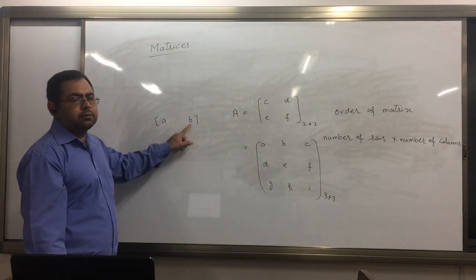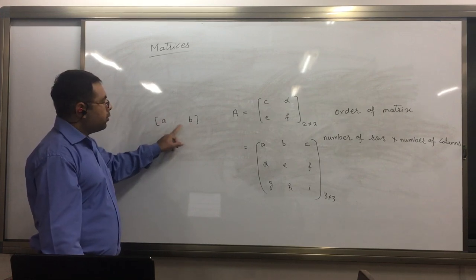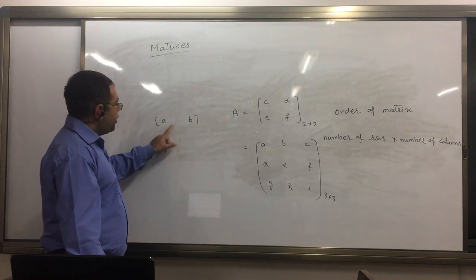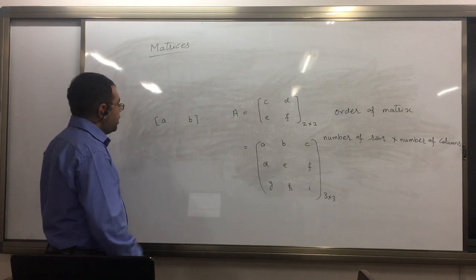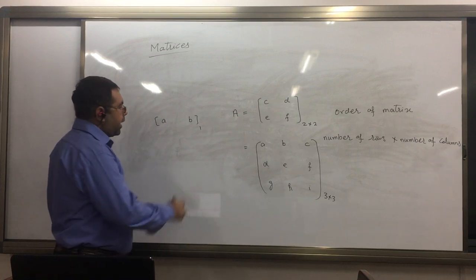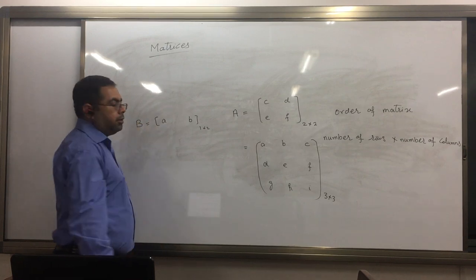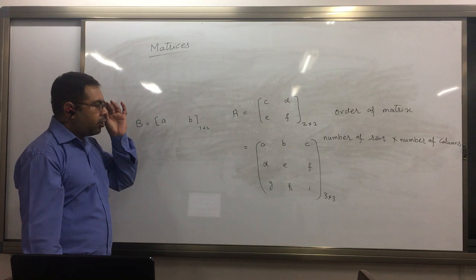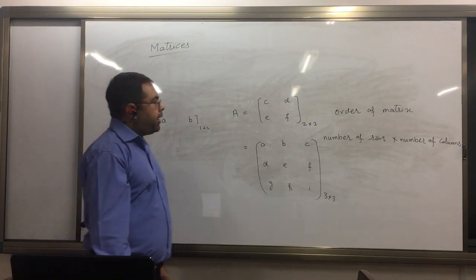Is this a square matrix? Is this a square matrix? Okay. This is not a square matrix because this has number of rows not equal to number of columns. This has one row and two columns, so this is not a square matrix. This is a rectangular matrix.